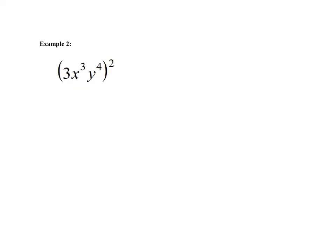Here's another example. This one is a little more complex. We have 3x to the third times y to the fourth, and all of that squared. If we had to write this whole thing out, what we're saying is we have 3 times x times x times x, times y times y times y times y.